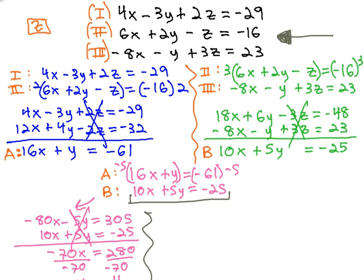We solved it by eliminating the same variable twice, and we selected z because we thought we could get opposites in front of z relatively easily so that it would eliminate. We used equations 1 and 2 and eliminated z, then we used equations 2 and 3 and eliminated z.